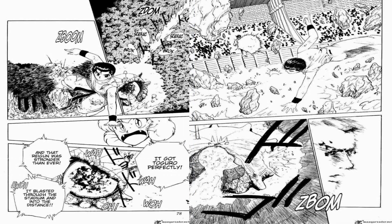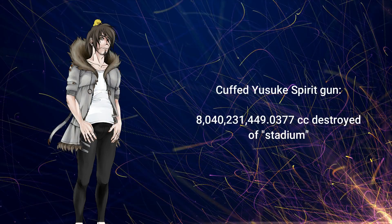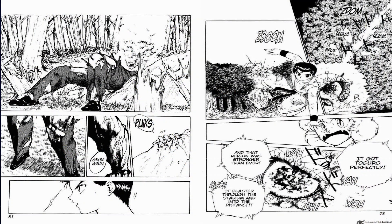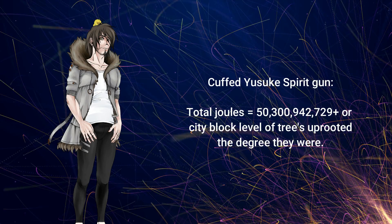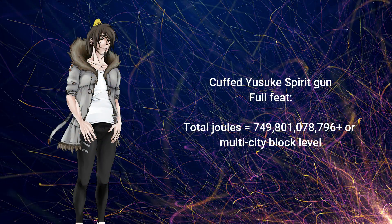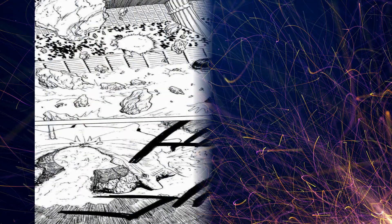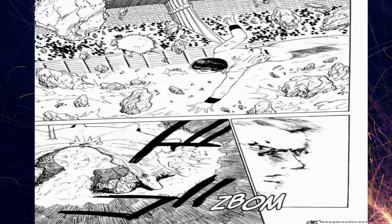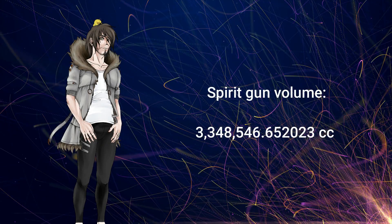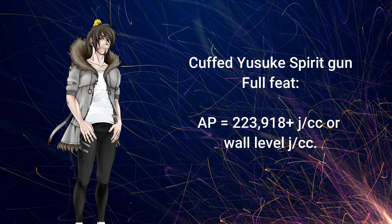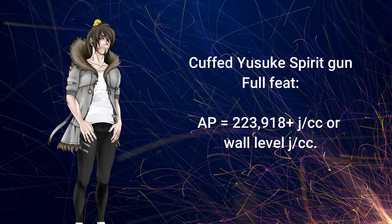This is a hell of a feat. The spirit gun clearly destroyed this many cubic centimeters of the stadium, already coming out to this many total joules, or multi-city block level. But we still have the trees — factoring in the distance and the amount of trees based on that distance, we find an additional this many total joules, or city block level. Combine the two for the full feat and we have this many total joules, or multi-city block level. However, the spirit gun is very large — Toguro is large — and its volume is at least this many cubic centimeters, meaning each cubic centimeter must be carrying at least this many joules per centimeter cubed, or wall level.